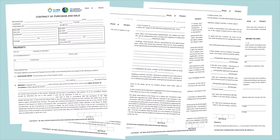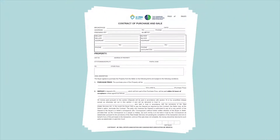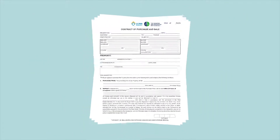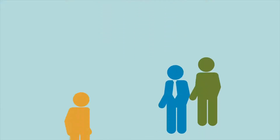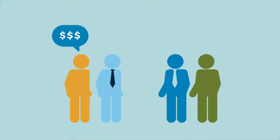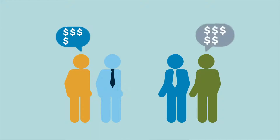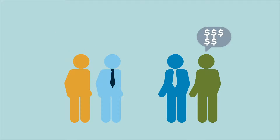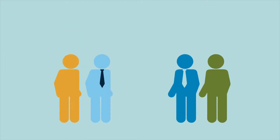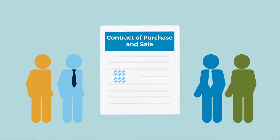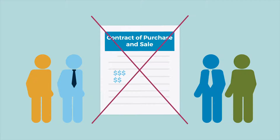Purchase price. The purchase price is the final price that both the buyer and seller agree on when the offer is accepted — the amount the buyer is willing to pay for the property. During negotiations, the price may change as counteroffers are exchanged. Typically, these changes are shown on the contract by marking up the document, with the buyer and seller initialing to show their agreement. This process continues until the parties agree on the final purchase price or the offer expires or is withdrawn.